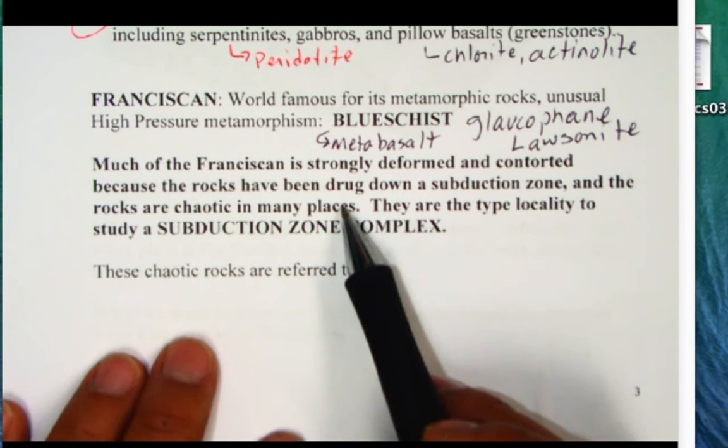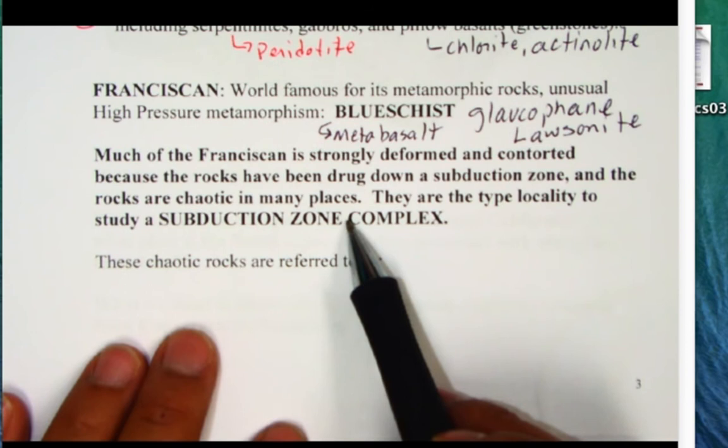Much of the Franciscan is strongly deformed and contorted because the rocks have been dragged down a subduction zone and the rocks are chaotic in many places. They are the type locality to study a subduction zone complex.